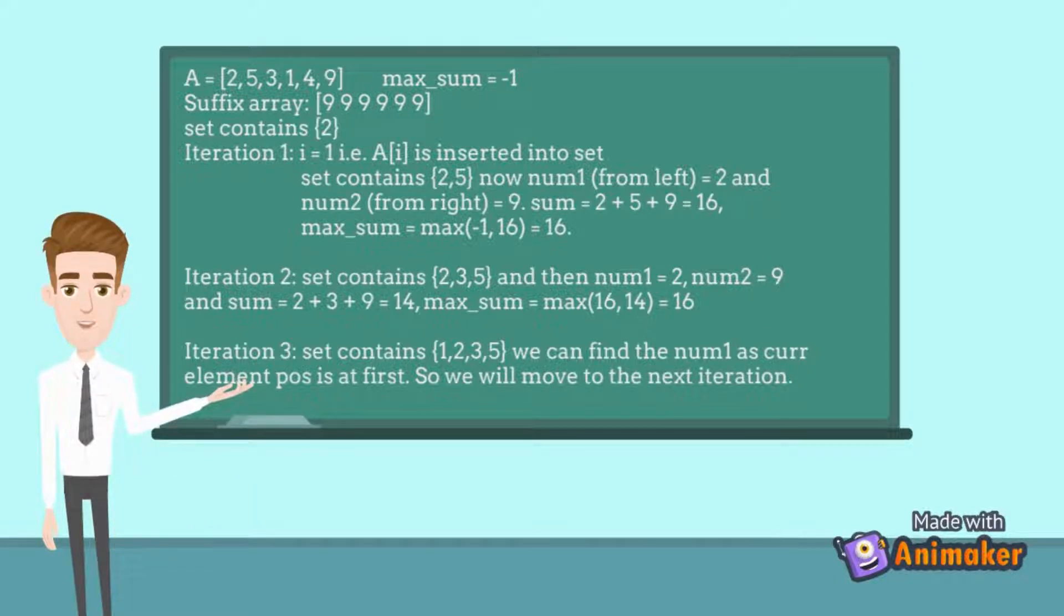For iteration 3, we cannot find the largest smaller number from left side, as the current element is 1, which is at the beginning of the set, so we move to next iteration.